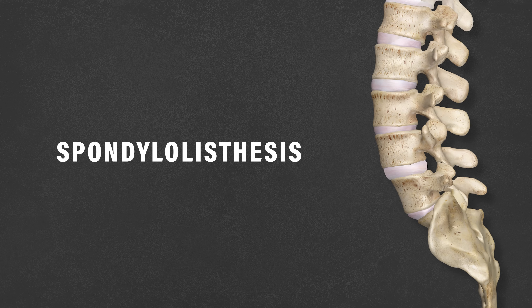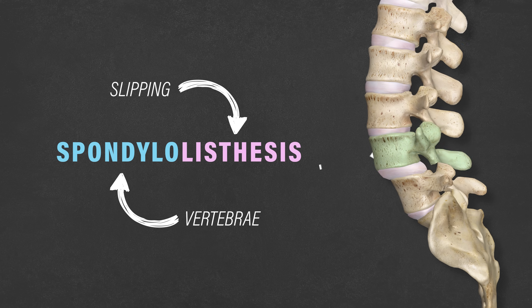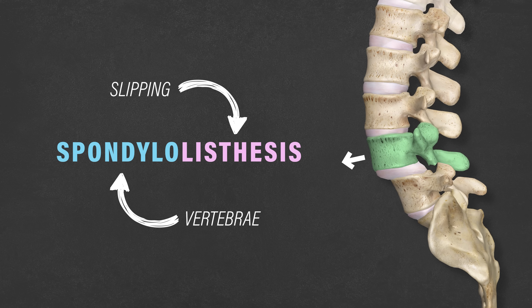What is spondylolisthesis? The first half of the word refers to the vertebrae of the spine, while the second half refers to slipping. Therefore, spondylolisthesis is the slipping of one vertebra in reference to the one below it.